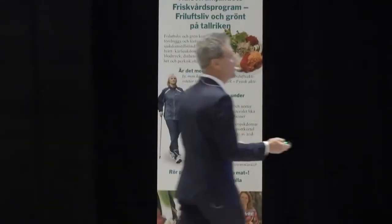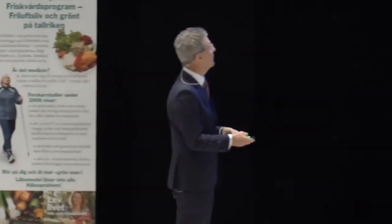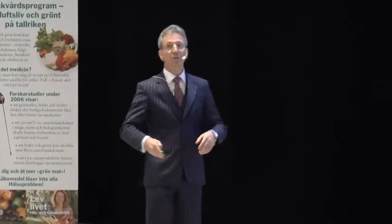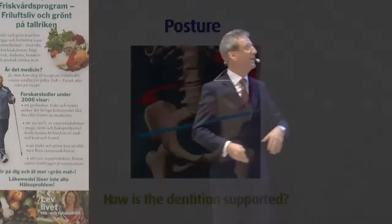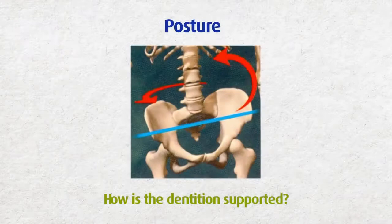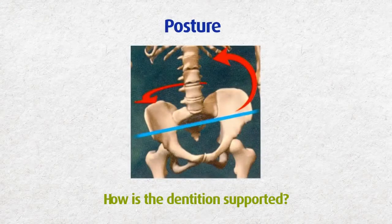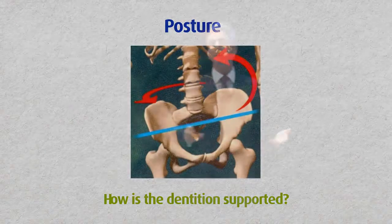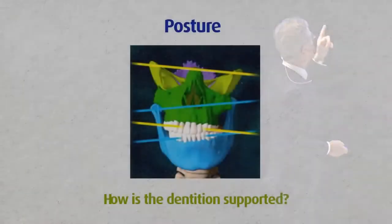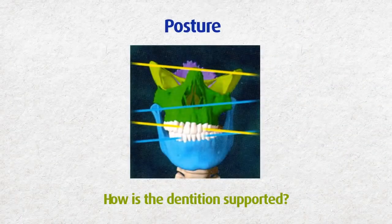If the feet aren't well balanced, then the pelvis will be rotated. If the pelvis is rotated, then the cranium will be out of balance. And if you've got a cranium this shape, trying to get the teeth straight while ignoring the structures of the bones of the cranium is, in my view, a mistake.